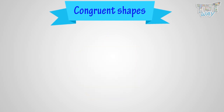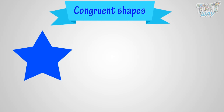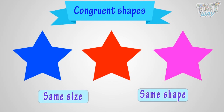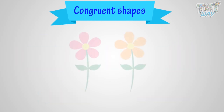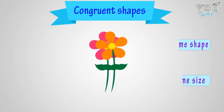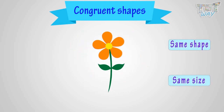Congruent shapes. Shapes that have the same shape and same size are called congruent shapes. Let's have a look at some examples. Here is a shape. Shapes congruent to this shape can be only this or this — exactly the same shape as well as size. Color can be different.